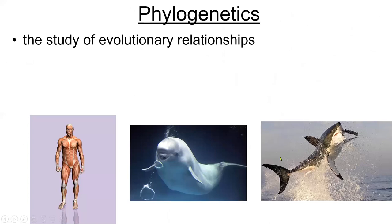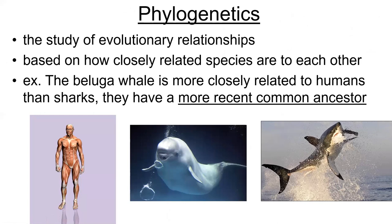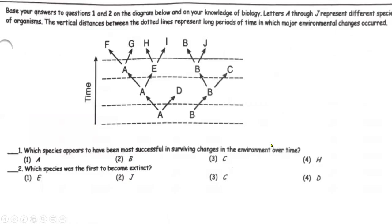This concept of studying evolutionary relationships is called phylogenetics. We do have a genetic basis for how closely related we are to other species. For example, the beluga whale is more closely related to humans than sharks because we have a more recent common ancestor, and you would be able to see that depicted on a cladogram.